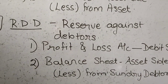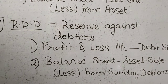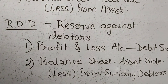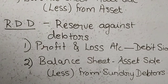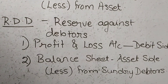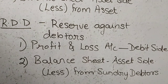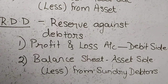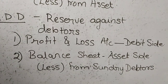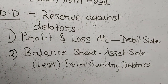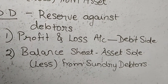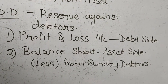The next adjustment relates to the debtors — this is the reserve for doubtful debts, or RDD. Out of the total debtors, there might be some who are defaulters and might not pay the amount due to the business. In such a case the business may suffer a loss. In order to compensate for the loss arising from bad debts, the business creates a reserve called RDD. This reserve has two effects: one is profit and loss account debit side, and secondly, the reserve is to be deducted from the value of sundry debtors on the balance sheet asset side.